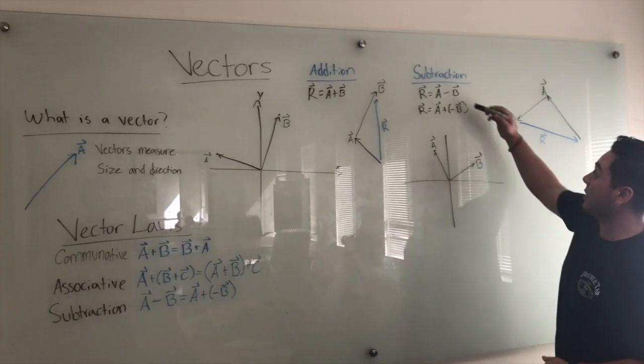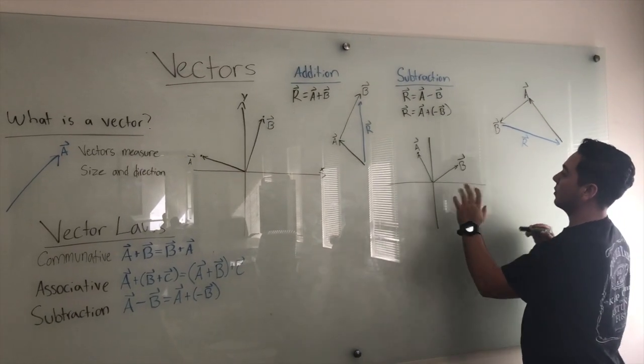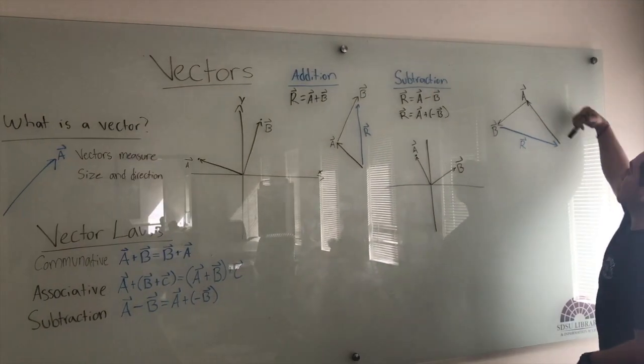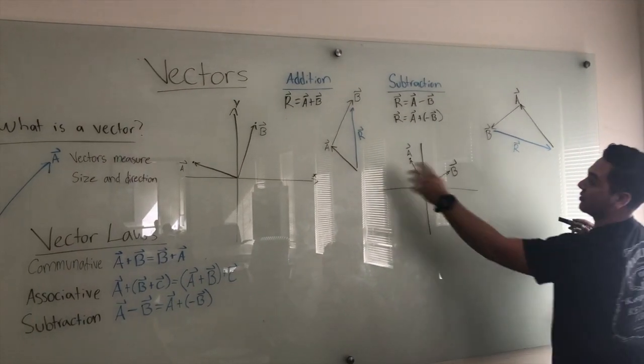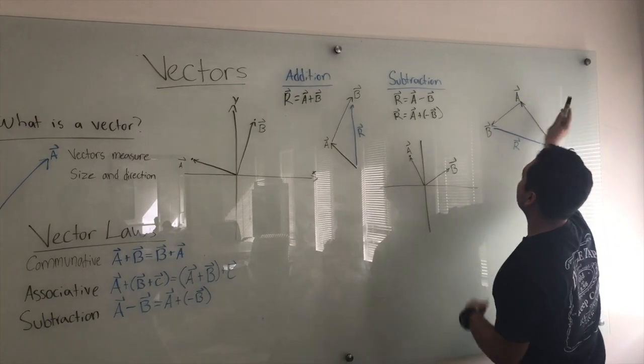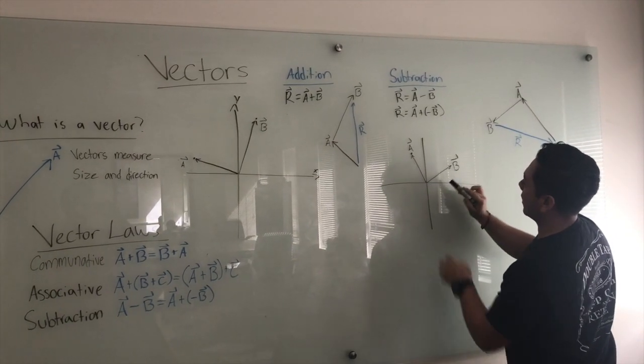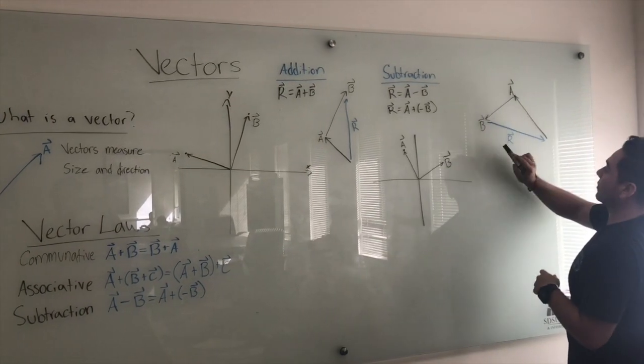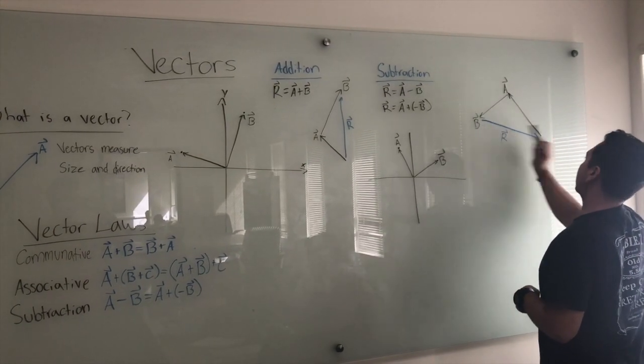And you can also subtract vectors right here too. Like I said earlier, it's easier if you put them on a plane. So you draw your a vector and you do the same as you did here. From the head you draw this b vector. However, since it's negative you got to go the other way, and then your resultant vector is from the head of b to the tail of a.